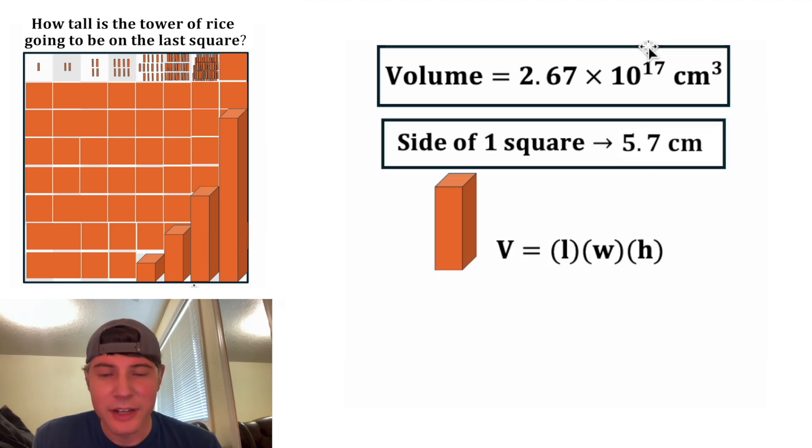Now let's look at our stack of rice. The volume of it is going to be length times width times height, where the length is this right here, the width is right here, and the height is right here. So we know that the volume of our rice stack is 2.67 times 10 to the 17. And that's going to be equal to the length, which we know is the side of one of the squares. That's going to be 5.7. And then the width will also be another side of the square. So that'll be another 5.7. And last, the height is what we're solving for. So we'll leave that as h.